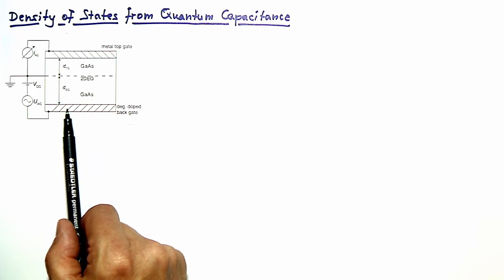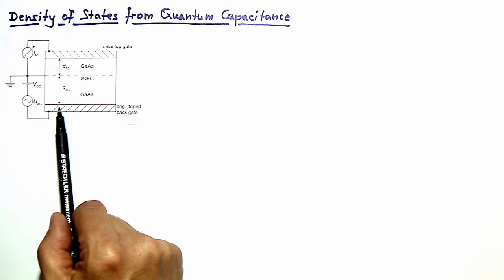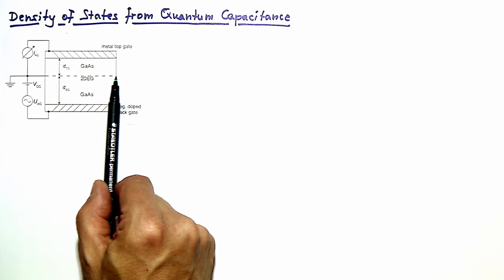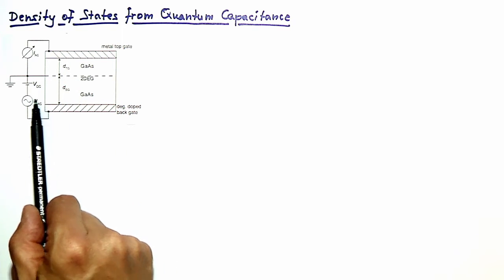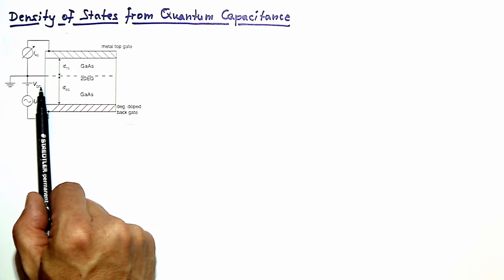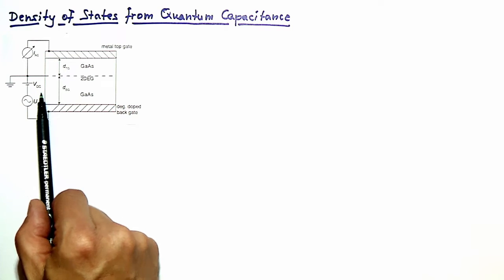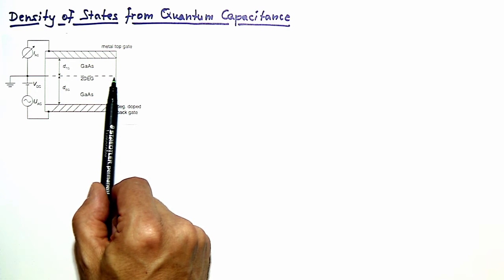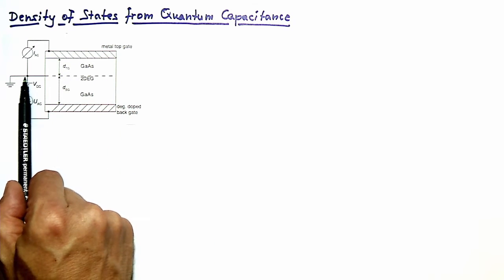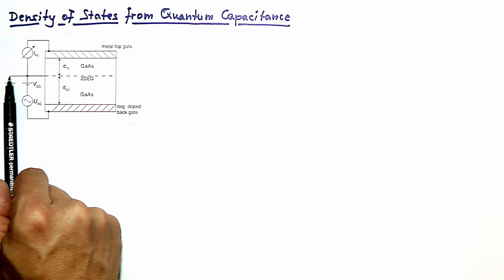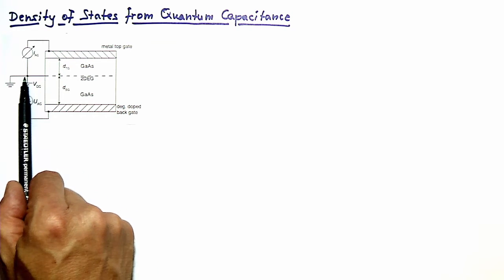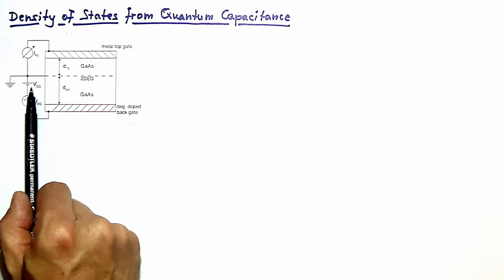The usual way of working with such structures is to use the field effect, which requires applying a voltage between the 2D electron gas and one of the gates — in this case the backgate. This voltage VDC is a static voltage that induces a certain carrier density in the 2D electron gas. Here we have decided to ground the 2D electron gas, so we apply VDC to the backgate relative to ground.